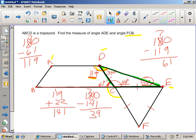I still have not found out that measure for angle ADE. In order to do that, I need to add these two together. So 119 and 39. I'll add them together. And I get 158 degrees. So angle ADE is equal to 158 degrees.